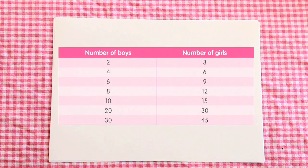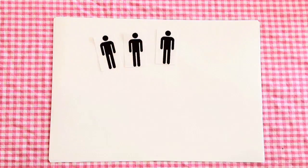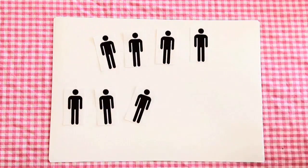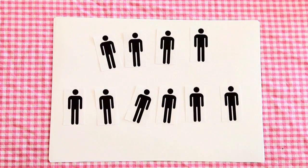Using this table, can you see a pattern develop? There are multiples of two in the boys' column and multiples of three in the girls' column. Therefore, for every 15 girls, there are 10 boys.